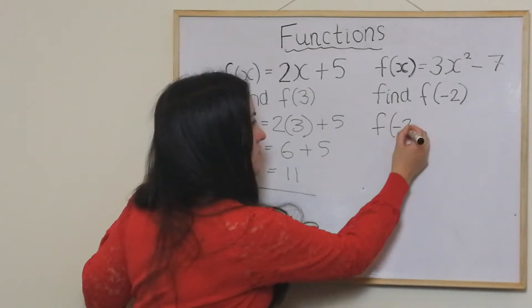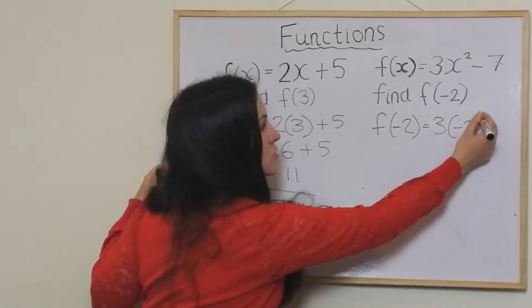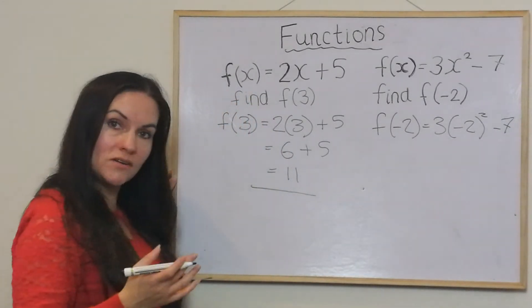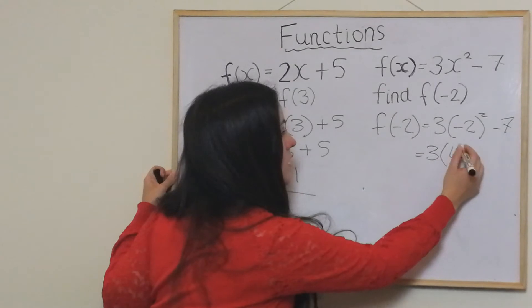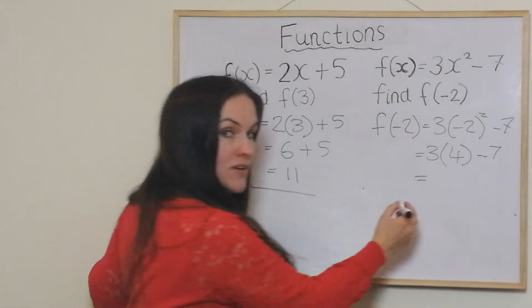So f of negative 2 equals 3 lots of negative 2 squared minus 7. Negative 2 squared is 4, so 3 times 4 minus 7.